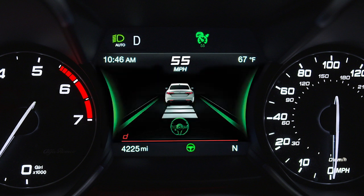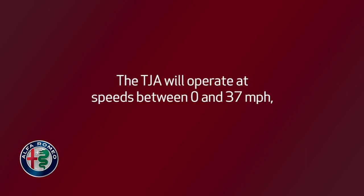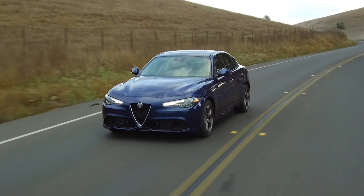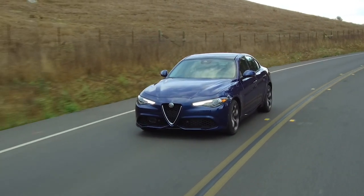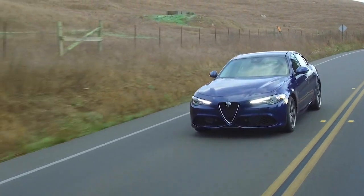If equipped, the Traffic Jam Assist system, or TJA, works much the same as Highway Assist, with the following differences. The TJA will operate at speeds between 0 and 37 miles per hour or 0 and 60 kilometers per hour. When the system is unable to detect lane boundaries, it can still operate using surrounding traffic.